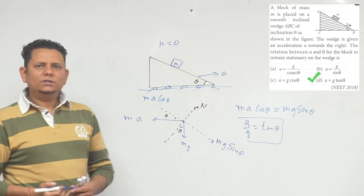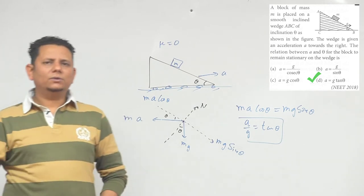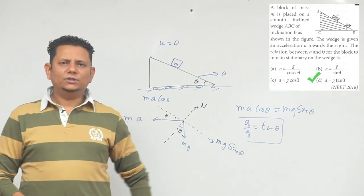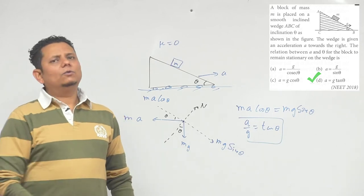So this is our necessary condition for this block to be stationary with respect to inclined plane. So based on this, option D, a equals g tan theta, would be the right answer.